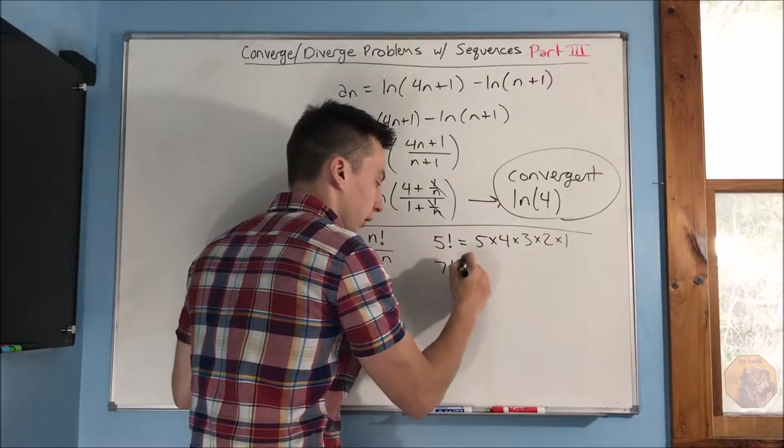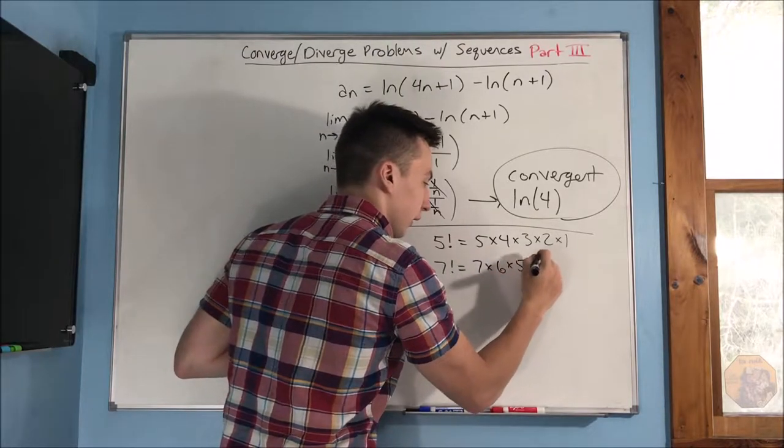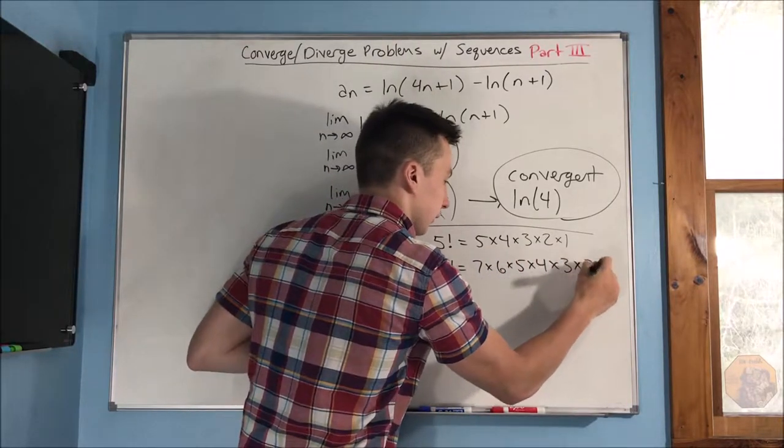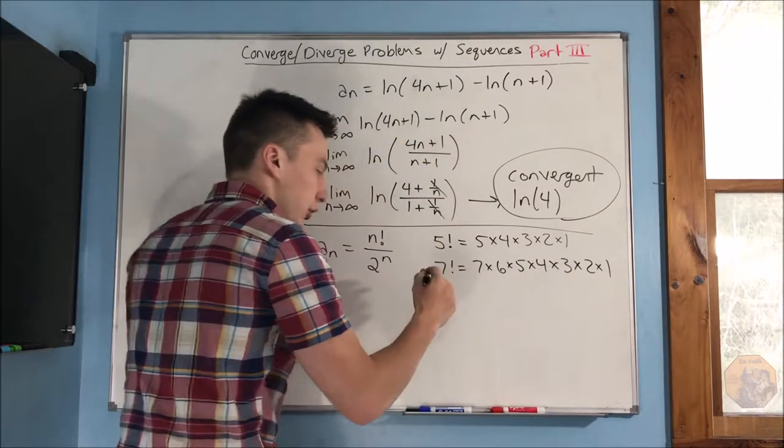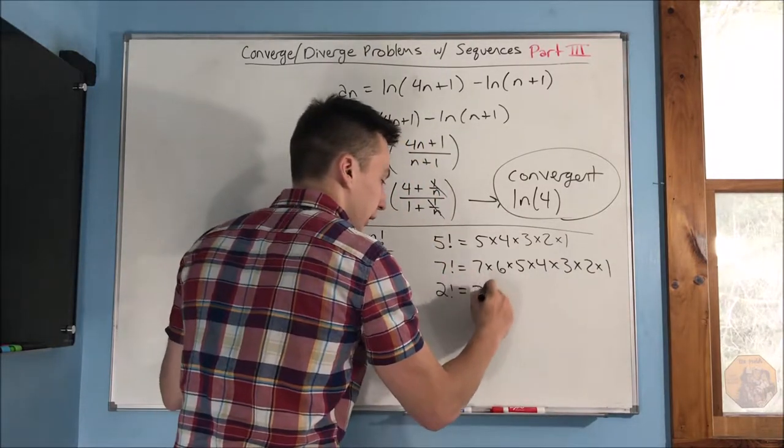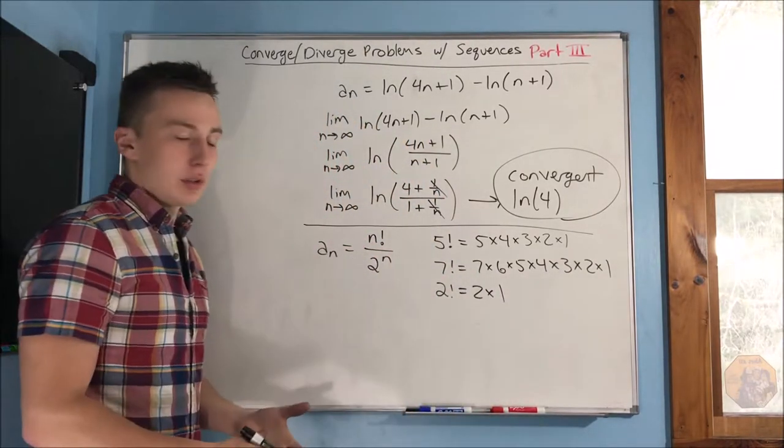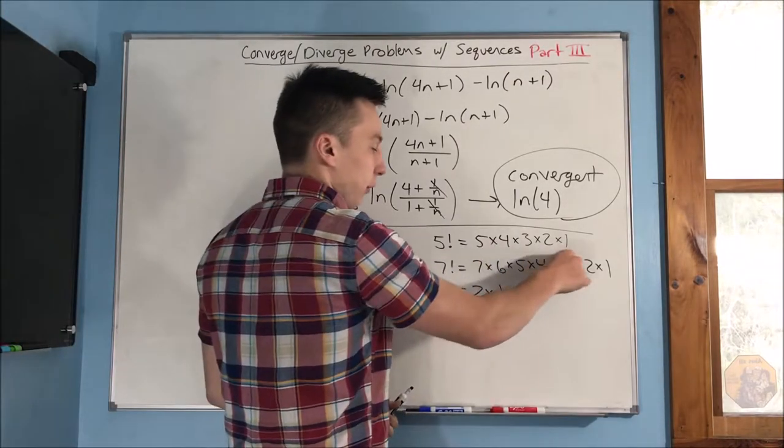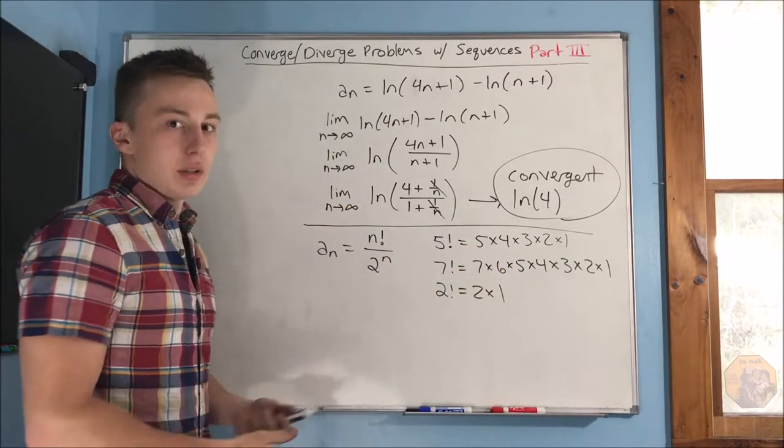7 factorial is 7 times 6 times 5 times 4 times 3 times 2 times 1. 2 factorial is just 2 times 1, and you kind of get the picture. You're just multiplying by every integer before that number and that number.